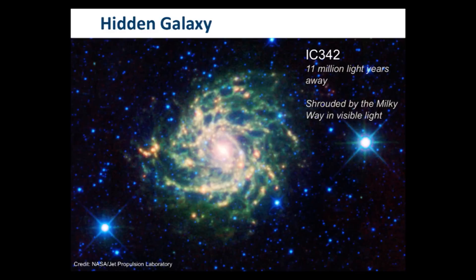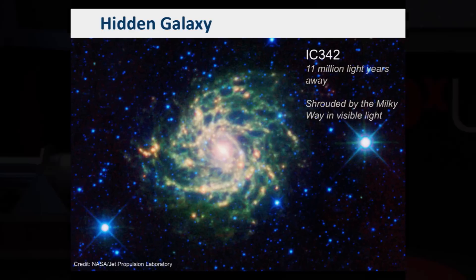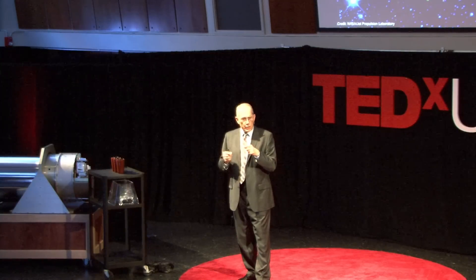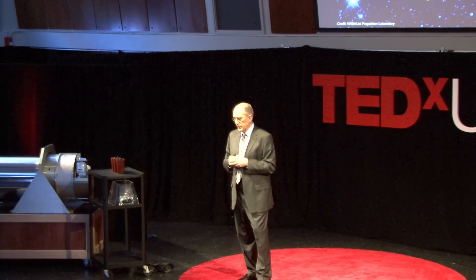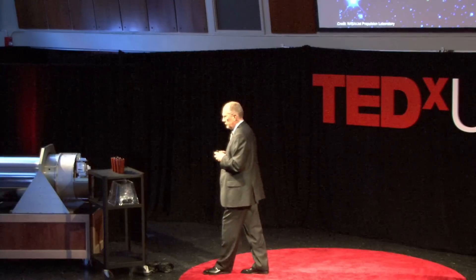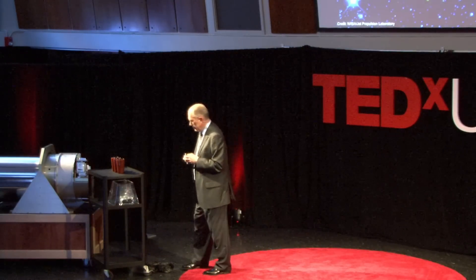The hidden galaxy is an interesting image because it can't be seen in the visible range. As the light travels through space, it has to pass through trillions of miles of dust, and the light is simply scattered away and never reaches our sensors here on Earth. But the infrared wavelengths are longer, and they can traverse and get past the dust better without being scattered.